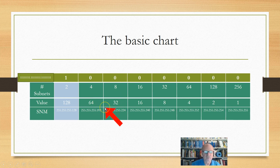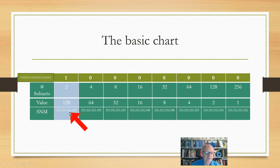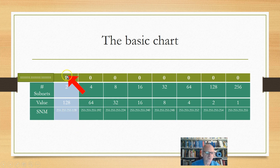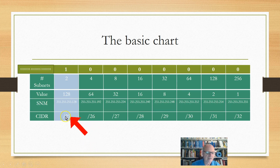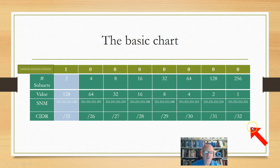One more thing I'm going to add to this: the CIDR notation. Remember, the CIDR notation for 255.255.255.0 is /24 — that's 8, 16, 24. But now I'm going to add one more, so the CIDR notation for 255.255.255.128 would be /25. If I put another one, the CIDR notation would be /26, then /27. Remember, this is the fourth octet that we're working in right here.